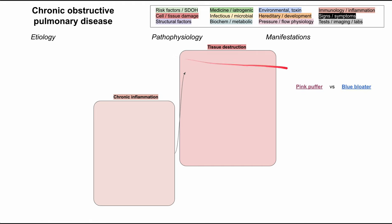I already mentioned the two big categories for manifestations — pink puffer and blue bloater — and we'll be designating the boxes according to those manifestations as well. But first, let's talk about the etiologies.